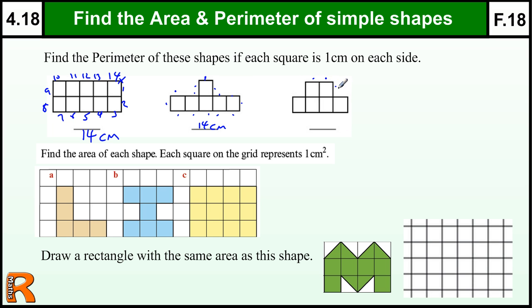And this one, 1, 2, 3, 4, 5, 6, 7, 8, 9, 10, 11, 12 cm. So that's the perimeter.